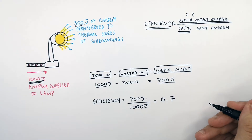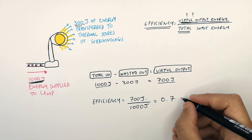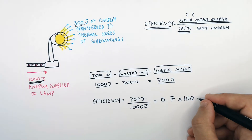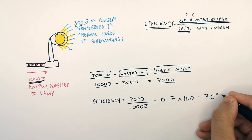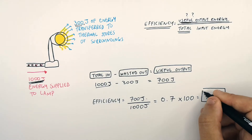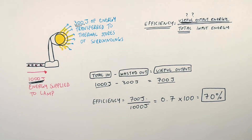This lamp has an efficiency of 0.7, but to get it into a percentage, you multiply by 100. So this lamp is 70% efficient, whereby 70% of the energy supplied to the lamp will be transferred to the useful energy stores of the lamp.